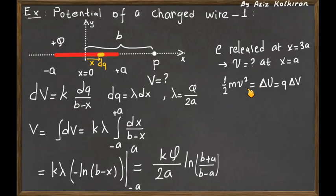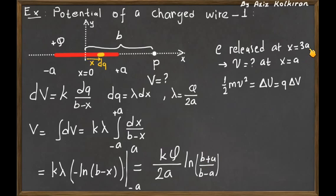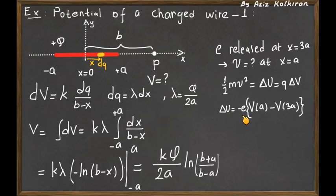Conservation of energy requires that the kinetic energy of the electron at x = a equals the potential energy difference between the two points. The potential energy difference is expressed as the charge of the electron times its change in electric potential. Using our derived expression, we evaluate the potential at b = 3a (initial point) and b = a (final point). The charge of the electron is -e, and the energy difference involves V_a minus V_{3a}.